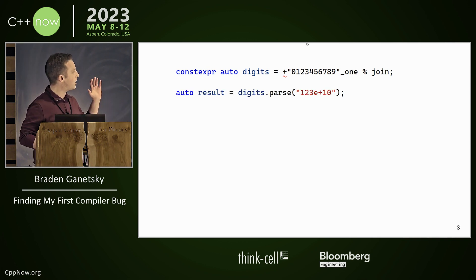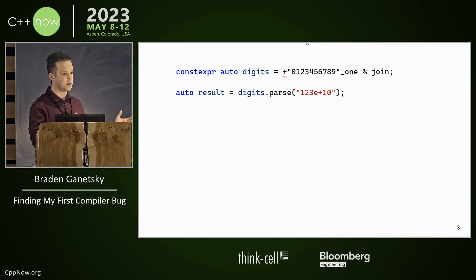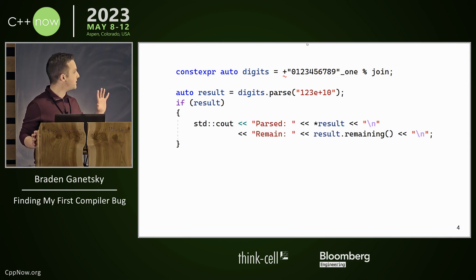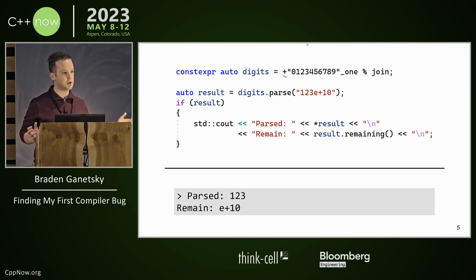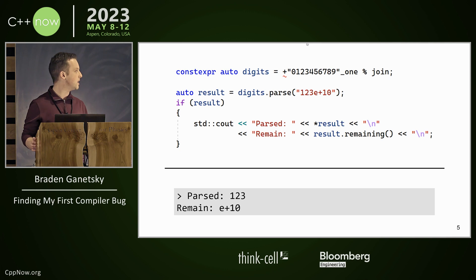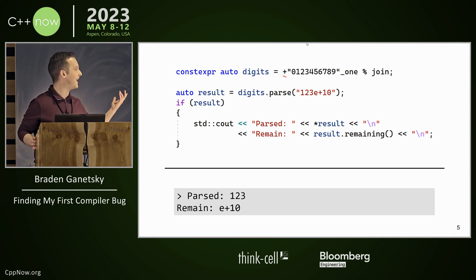To use my parser, I call dot parse on it and give it a string. So if you give it the string '123E+10', because the parser parses one or more digits 0 through 9, if I print it out, it should give me '123' parsed, and then remaining is 'E+10'. This result type is essentially just an optional outfitted with another function, dot remaining, so I can grab the remainder and actually use it for useful things. This is sort of what a lot of the stuff in my library looks like — it's just for my own use, so if you don't like it you can tell me, but I like it anyway. I won't change it.